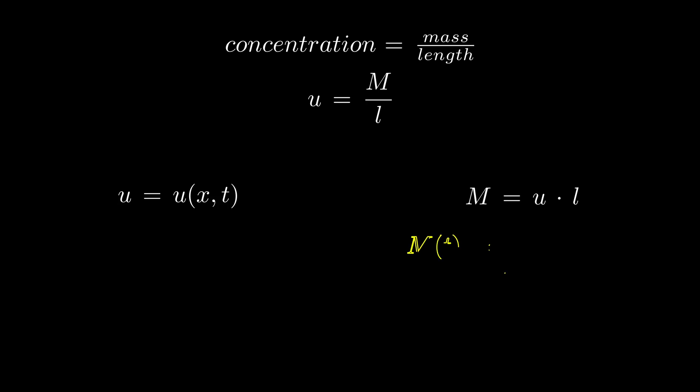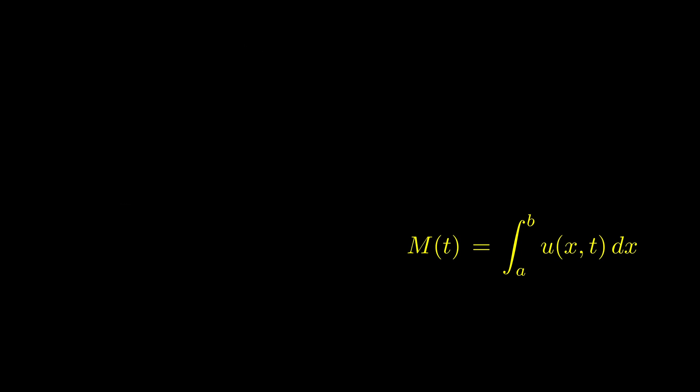In our case, it is very similar. The mass of a substance across some interval from a to b at time t is equal to the integral of concentration with respect to distance from a to b. We want to look at how the mass changes with time, so we differentiate it. This quantity is called a mass flow.